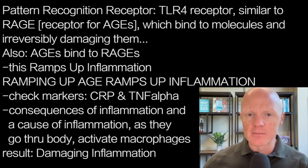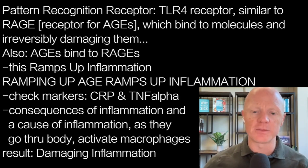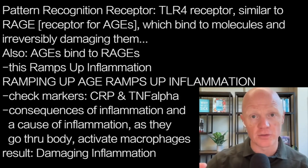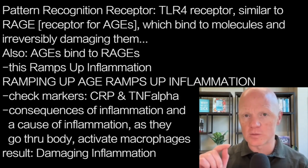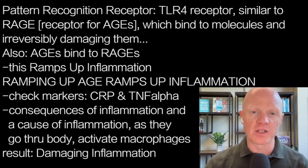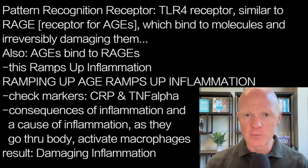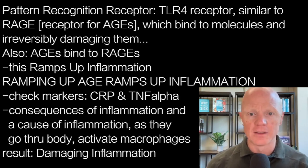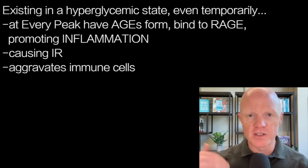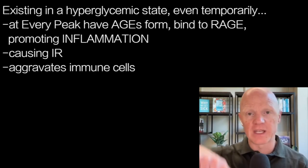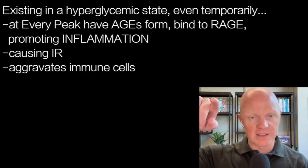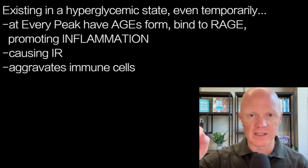The more we have inflammation, the more we're damaging tissues. Inflammation is something intended to be turned on and then turned off — it has a very specific target, like a wound or a particular bacteria to fight. When you have this metabolically derived inflammation, there's no end. As long as a person continues to exist in a hyperglycemic state, even temporarily spiking it up and down, at that peak you have the formation of advanced glycation end products.